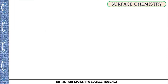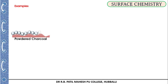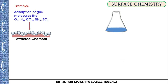Let us see some examples we come across in our daily life. The first example is powdered charcoal, which has the ability to adsorb gas molecules like oxygen, hydrogen, carbon dioxide, ammonia, sulfur dioxide, etc. Gas molecules are adsorbed on its surface.